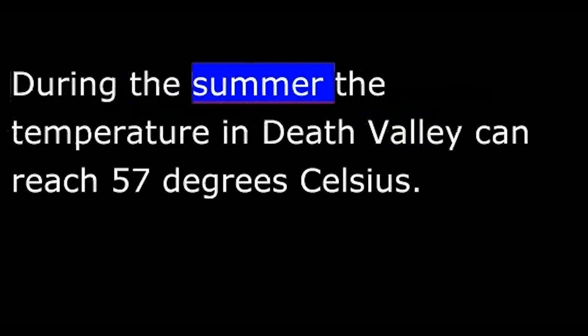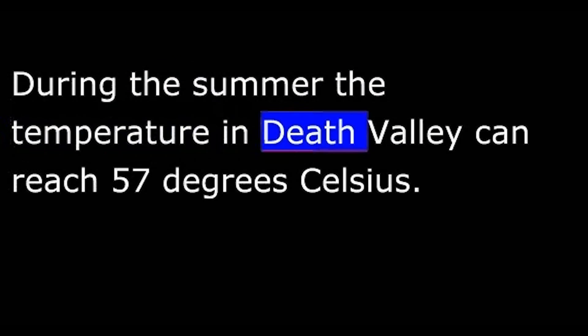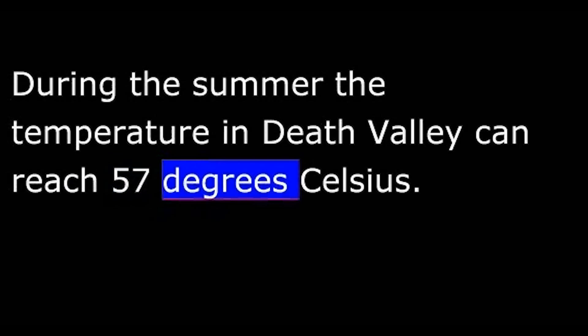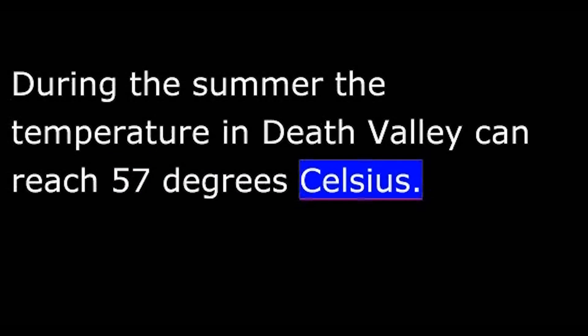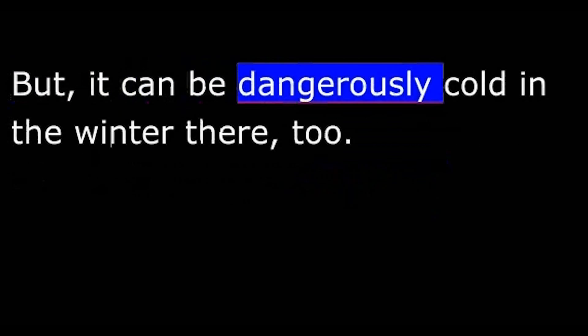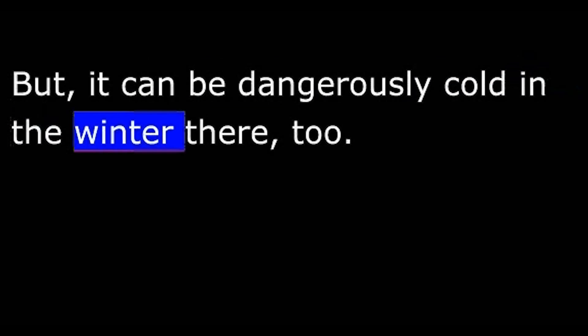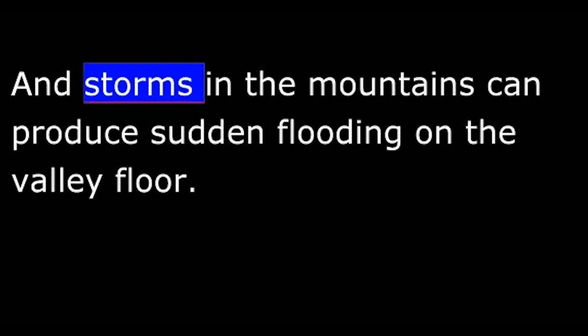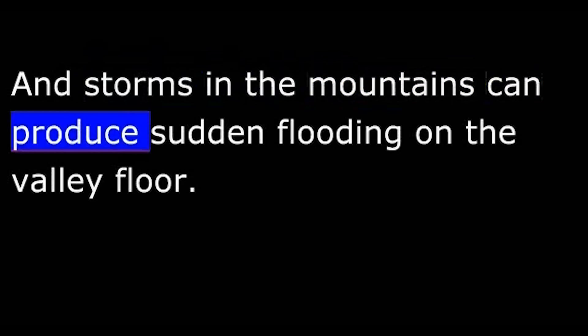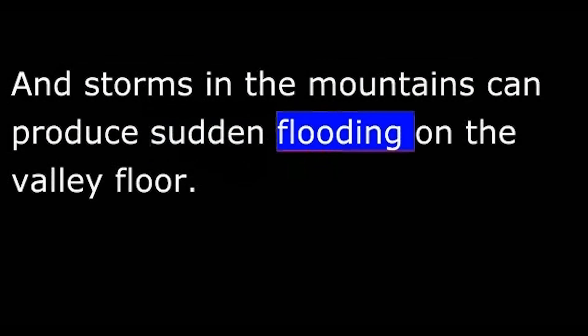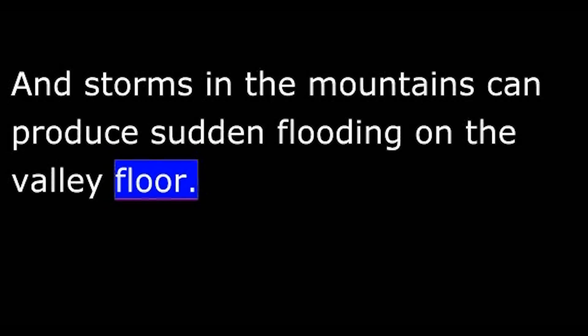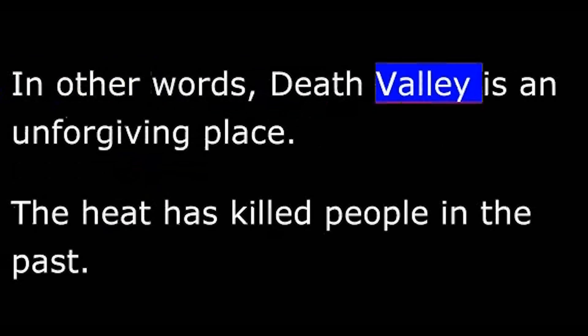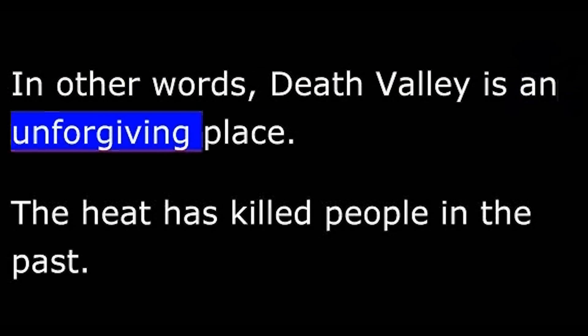During the summer, the temperature in Death Valley can reach 57 degrees Celsius. But it can be dangerously cold in the winter there, too. And storms in the mountains can produce sudden flooding on the valley floor. In other words, Death Valley is an unforgiving place.